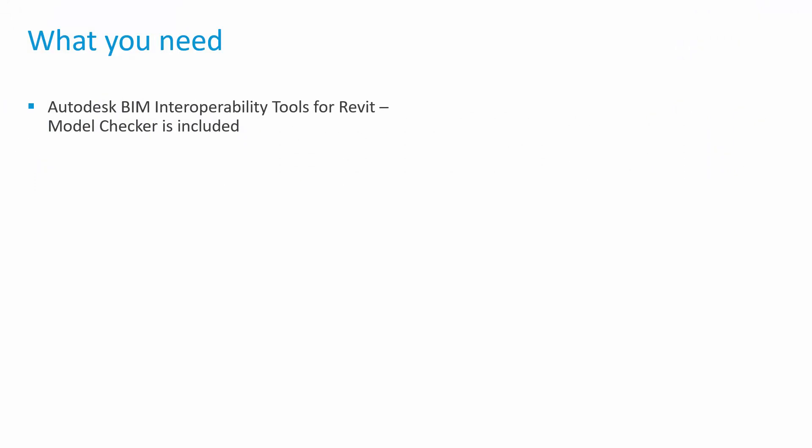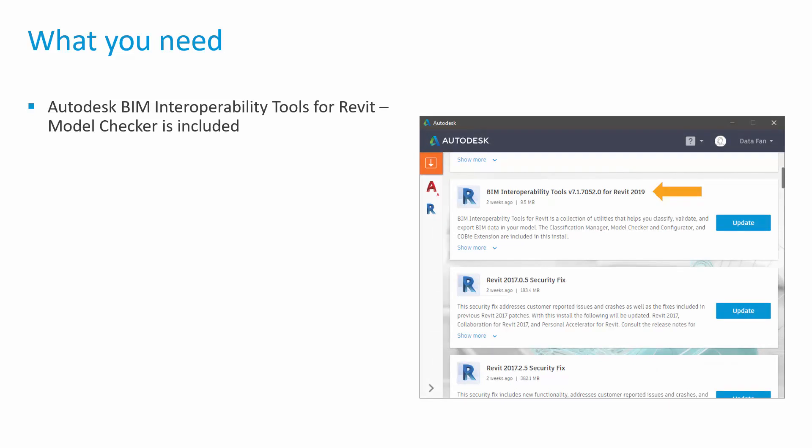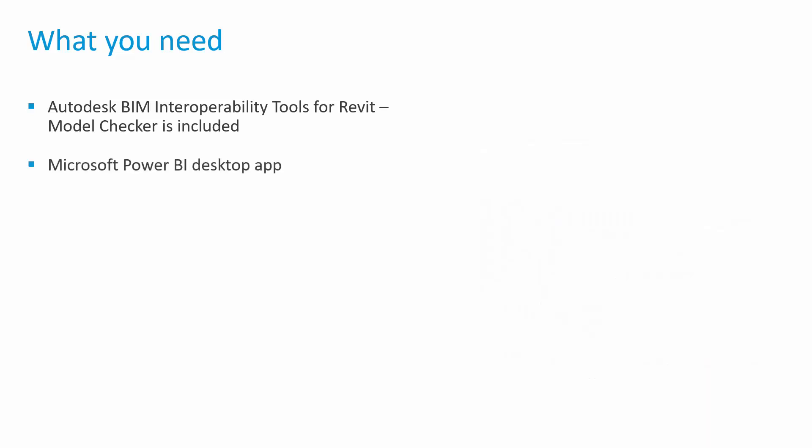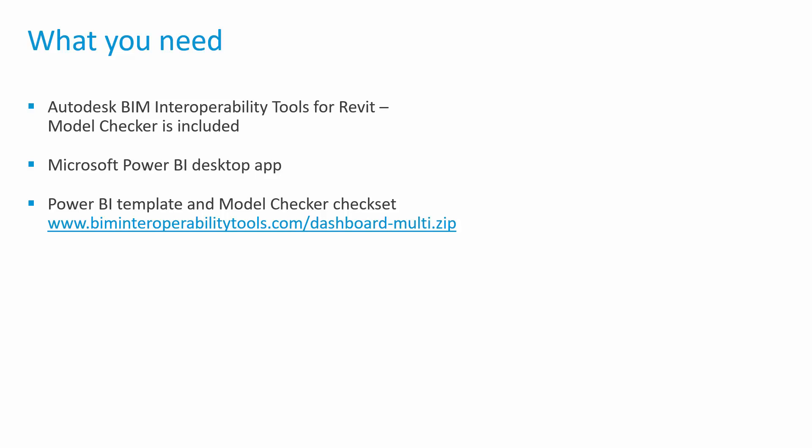What you'll need to get this done: the Autodesk BIM Interoperability Tools for Revit, which includes Model Checker — available through the Autodesk Desktop App or your Autodesk account manage page. You'll also need the Microsoft Power BI Desktop app, so if you don't have access, get in touch with your IT team. You'll need the Power BI template and Model Checker check set. The Power BI template is in a zip file, with a link on the BIM Interoperability Tools page. There's dashboard.zip for the single-project template and now dashboard-multi.zip for multiple projects.